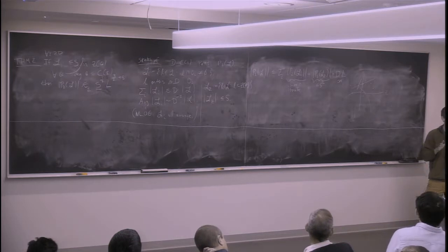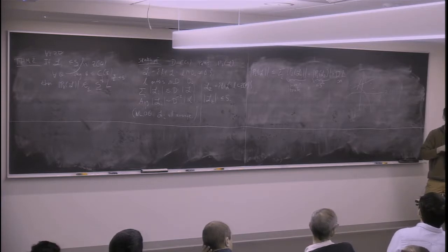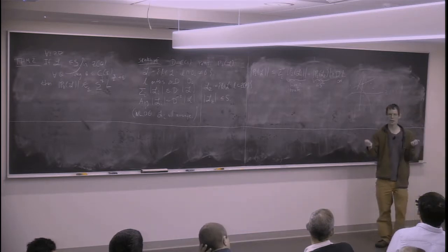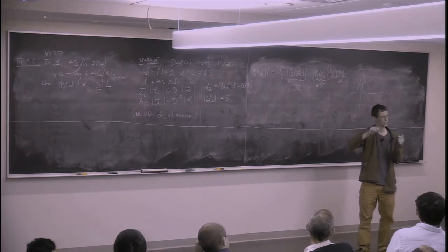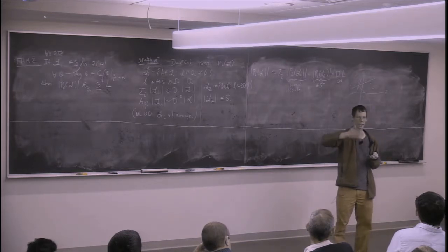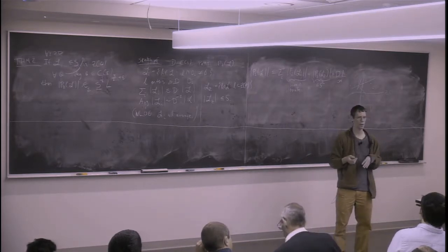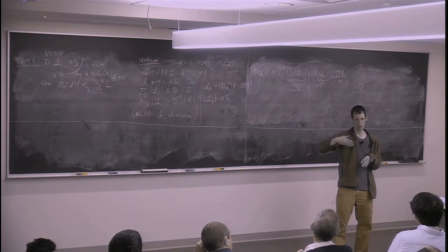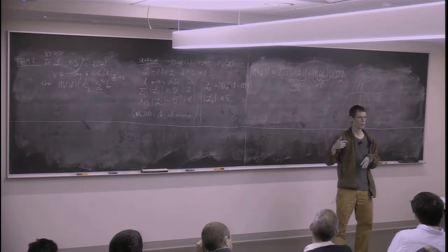Let's pause for questions before switching to the Fourier analysis problems. Regarding the polynomial partitioning lemma — it's not that hard to prove. It might remind you of the ham sandwich theorem: if you want a plane that cuts things nicely, you use the ham sandwich theorem. This is a fancy version. Stone and Tukey proved the general version in 1941. The original ham sandwich theorem found hyperplanes bisecting n sets in Rⁿ; this generalization uses zero sets of higher-degree polynomials.